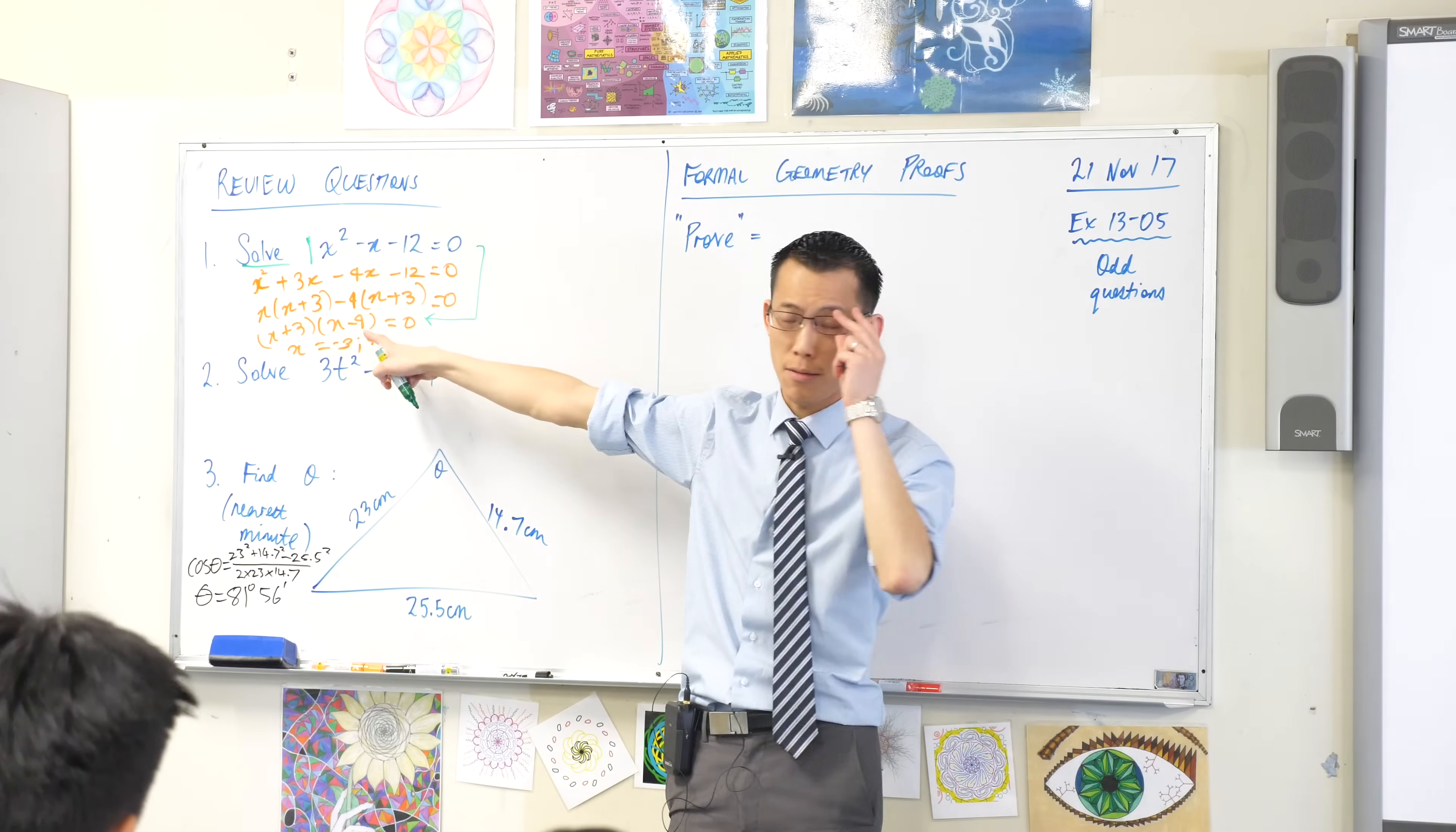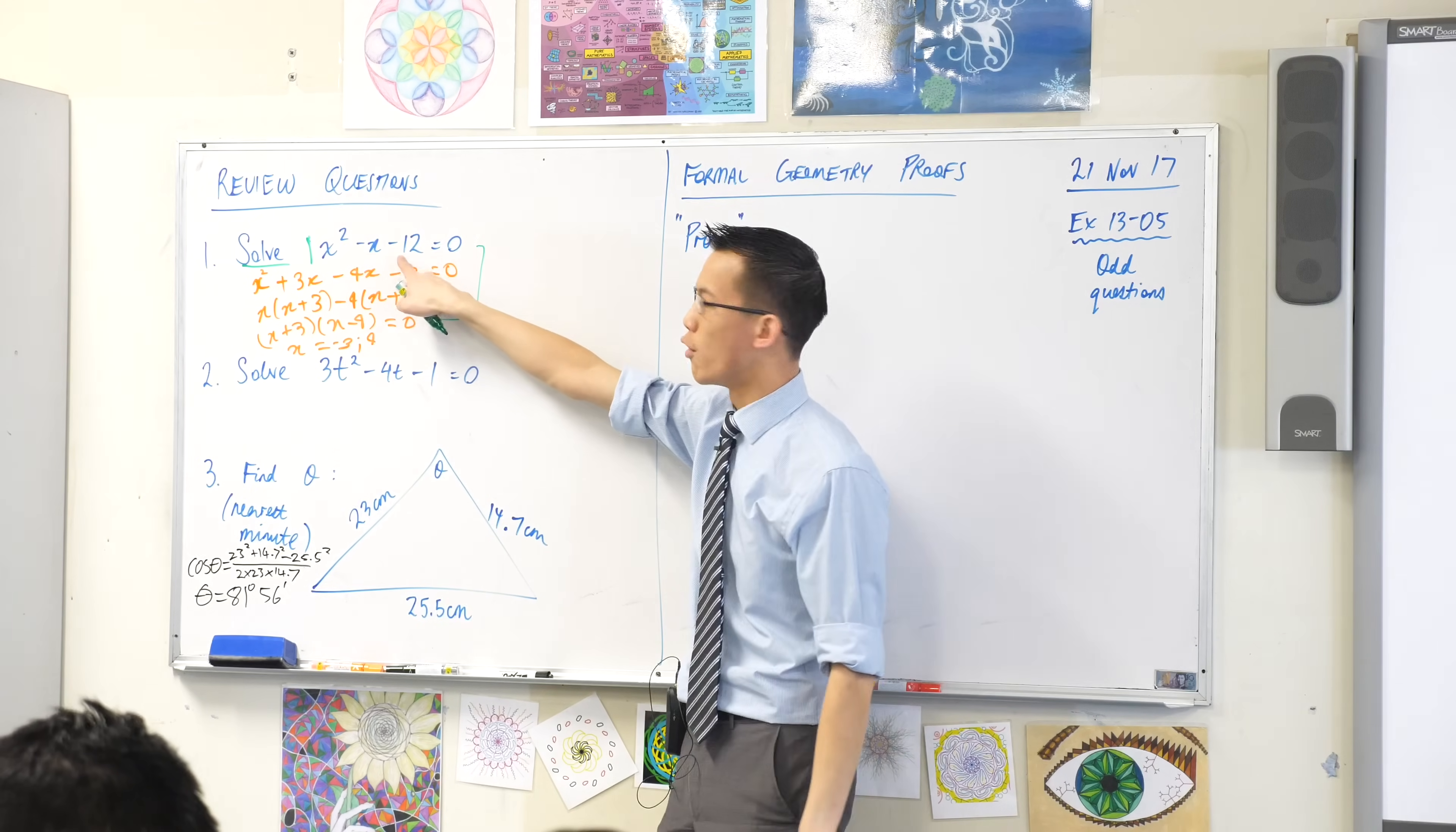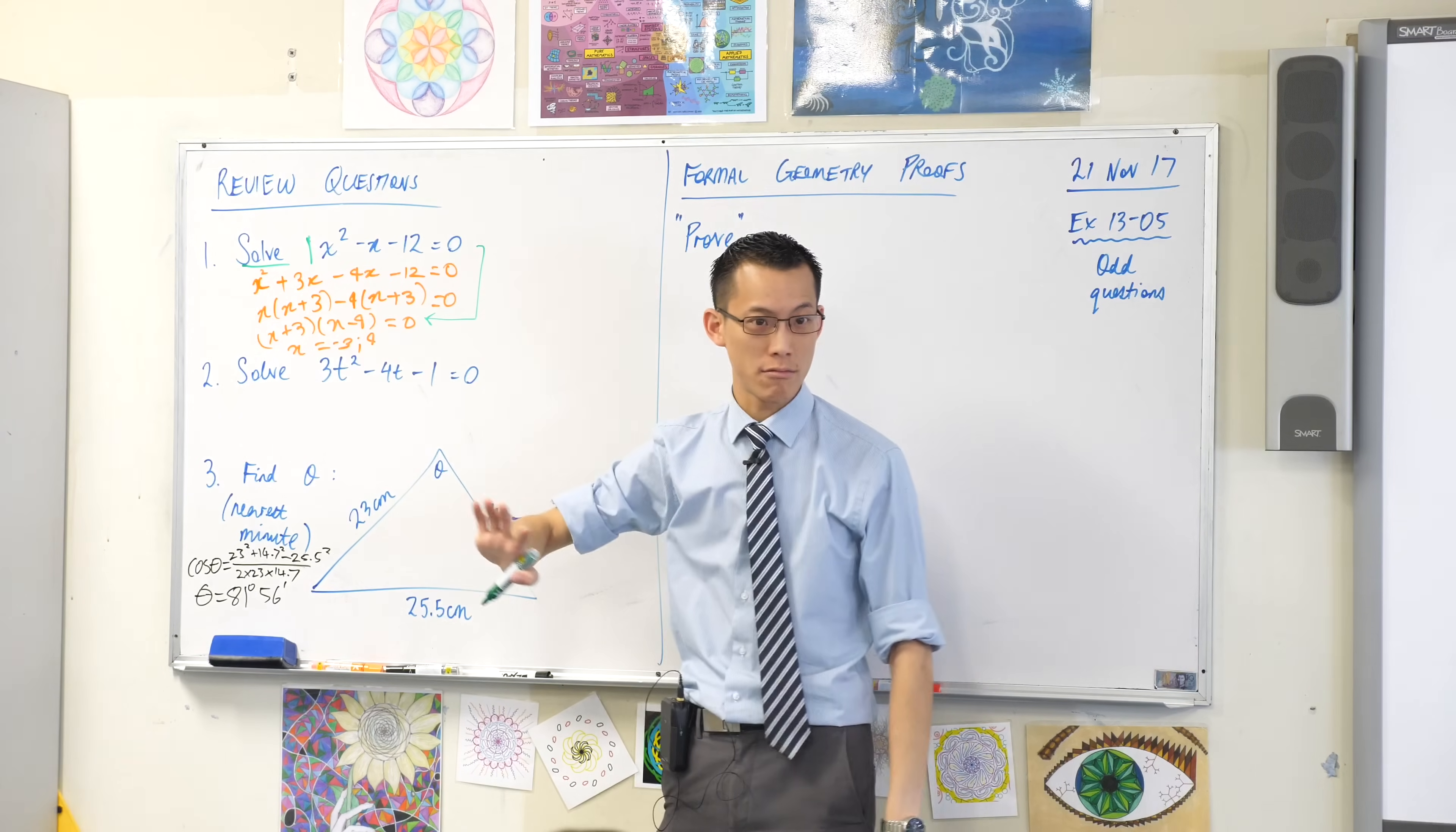You can go straight to this line, right? 3 and negative 4, they'll multiply to that and they'll add to that, okay?